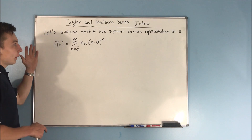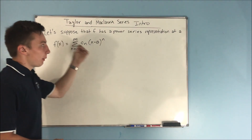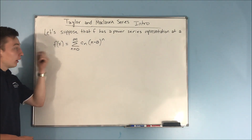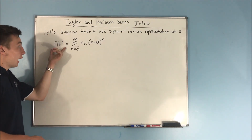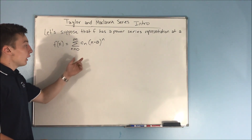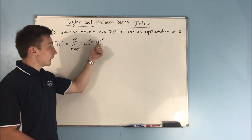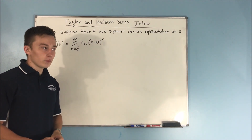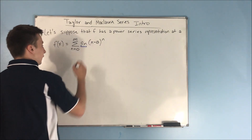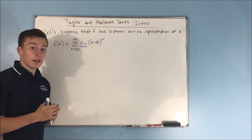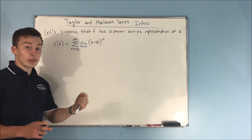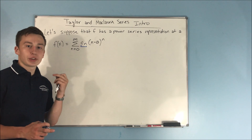We're going to start off here. Let's suppose that f has a power series representation at a. We're going to say f of x is equal to the general power series formula: the sum from n equals 0 to infinity of c sub n times x minus a to the nth power. What we're going to try to do is describe c sub n in terms of our derivative, and that is going to give us what the Taylor series actually is.